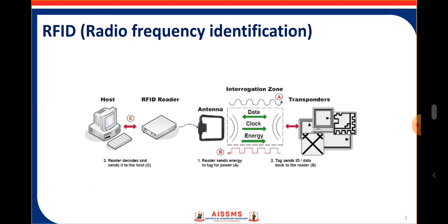Here you can see the host, RFID reader, antenna, and the transponders. RFID belongs to a group of technologies referred to as automatic identification and data capture. These methods automatically identify objects, collect the data about them, and enter that data directly into computer systems with very little or no human intervention.